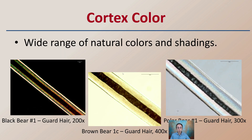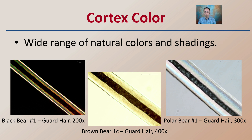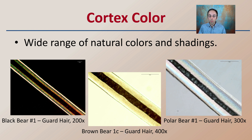Moving on to cortex color — there's a wide range of natural colors and shadings that occur. Looking at guard hairs of a black bear, a brown bear, and a polar bear, we can see the differences in cortex color and shadings clearly in those samples.